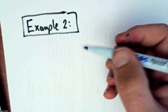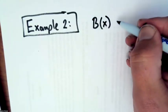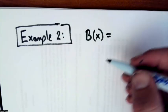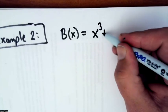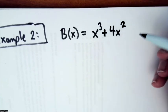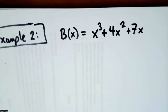So example two would be saying B(x) is equal to, I'm going to say similar thing. It's going to be a cubic polynomial. So x cubed plus 4x squared plus 7x.